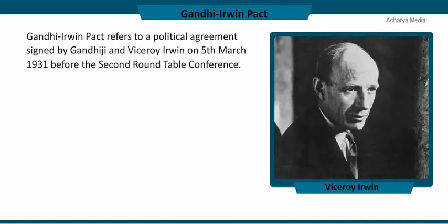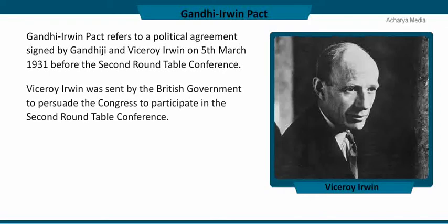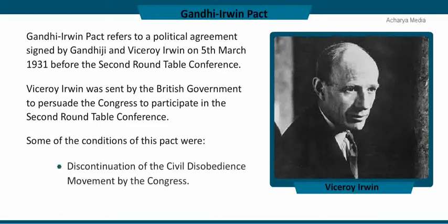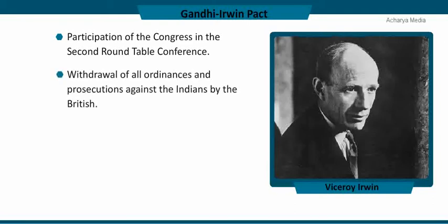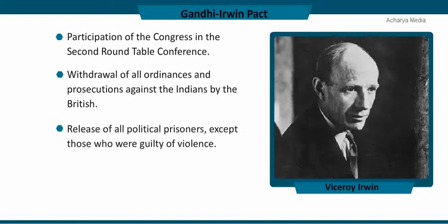The Gandhi-Irwin Pact refers to a political agreement signed by Gandhiji and Viceroy Irwin on 5 March 1931 before the Second Roundtable Conference. Viceroy Irwin was sent by the British government to persuade the Congress to participate. Some conditions of this pact were: discontinuation of the civil disobedience movement by the Congress, participation of the Congress in the Second Roundtable Conference, withdrawal of all ordinances and prosecutions against Indians by the British, and release of all political prisoners except those guilty of violence.